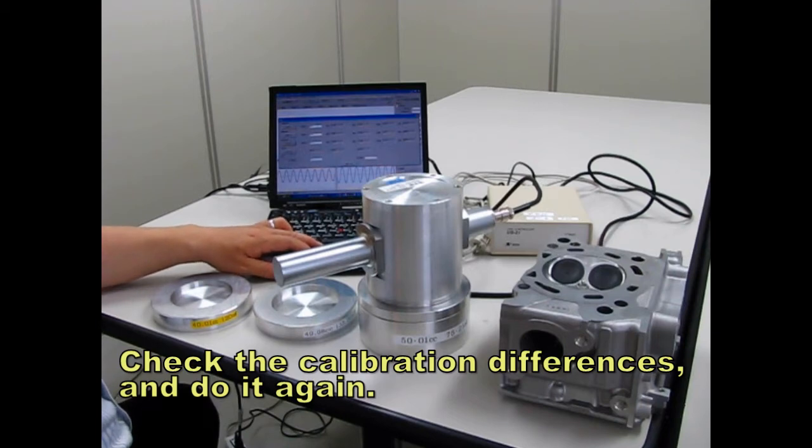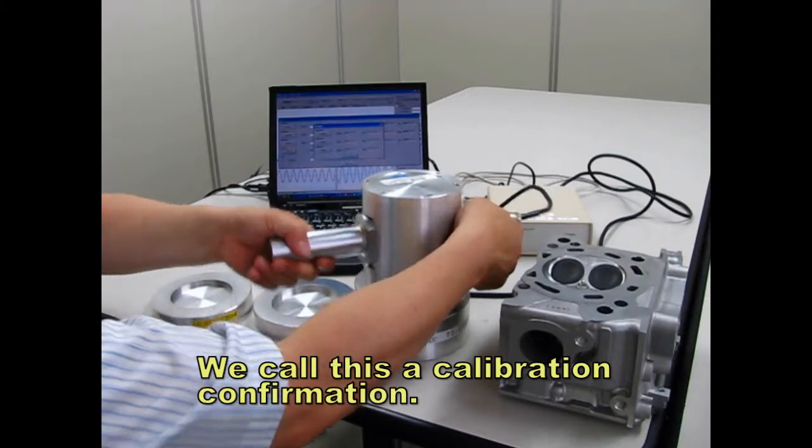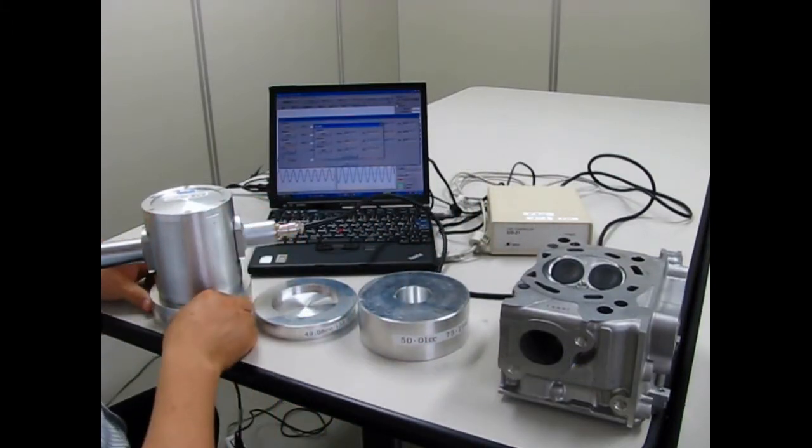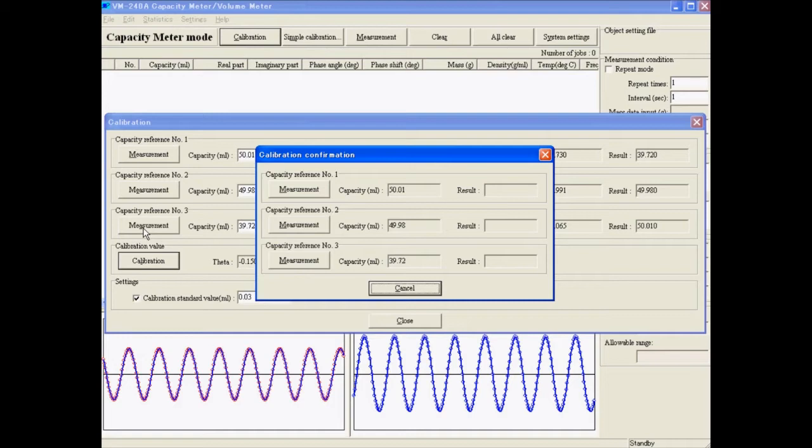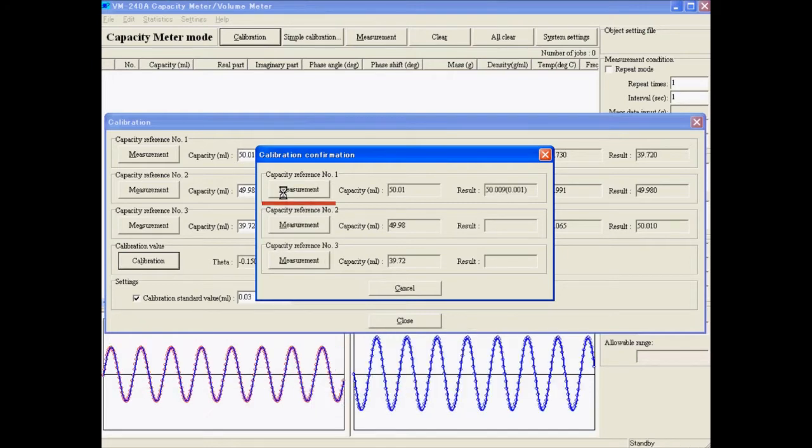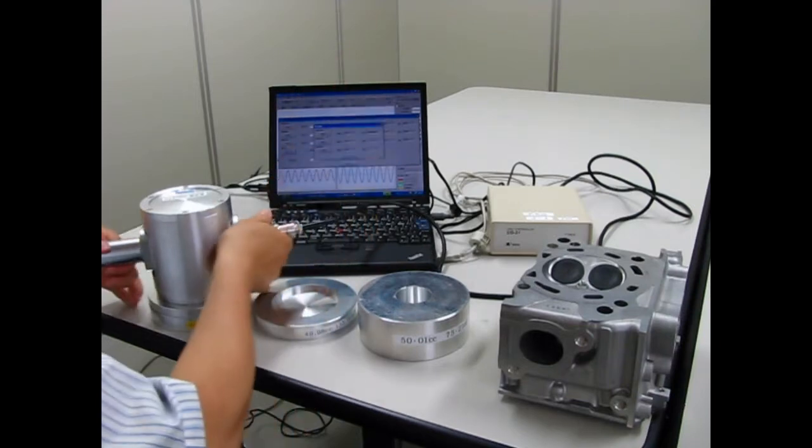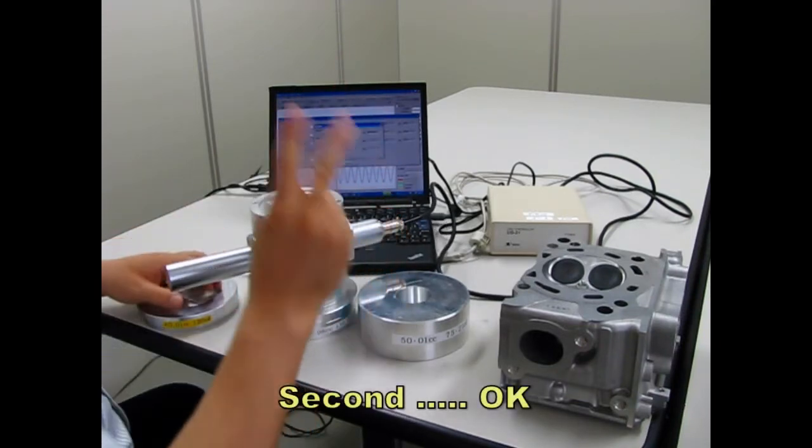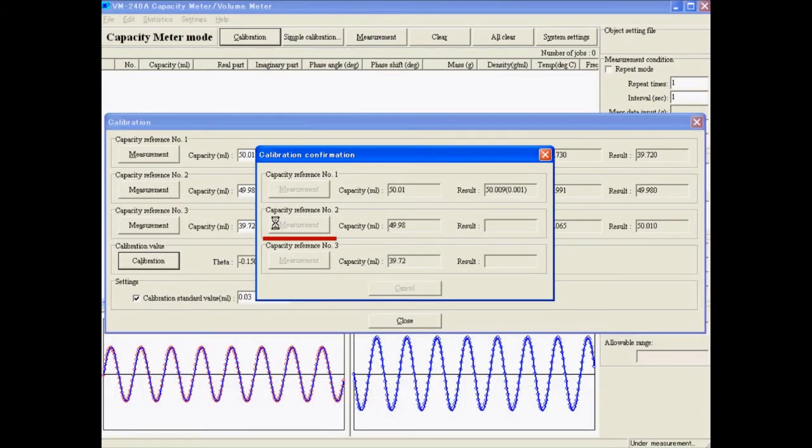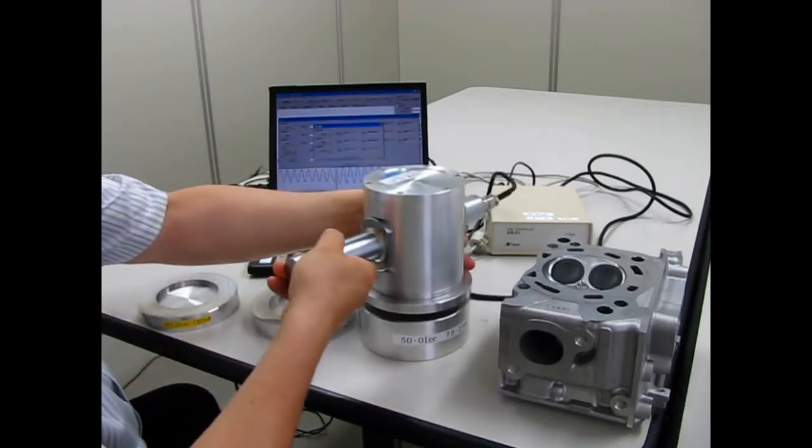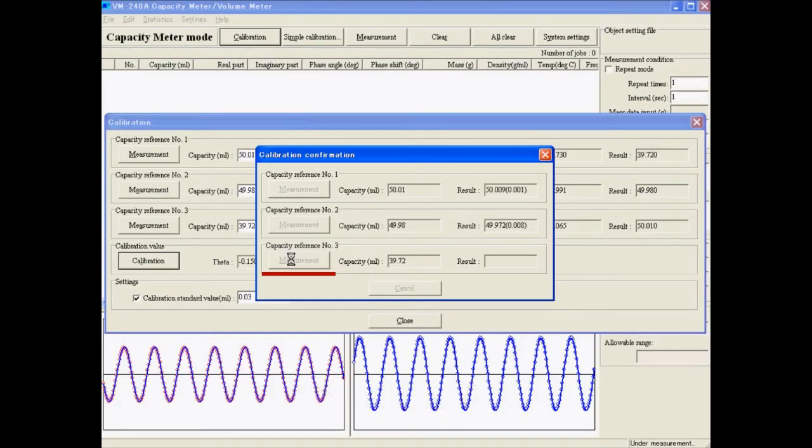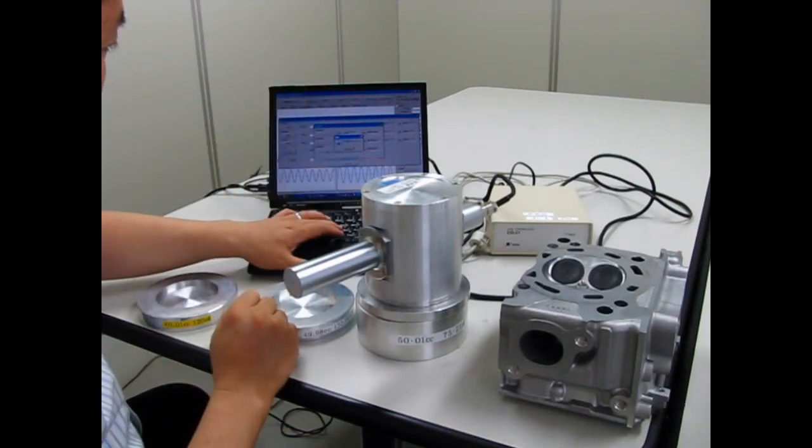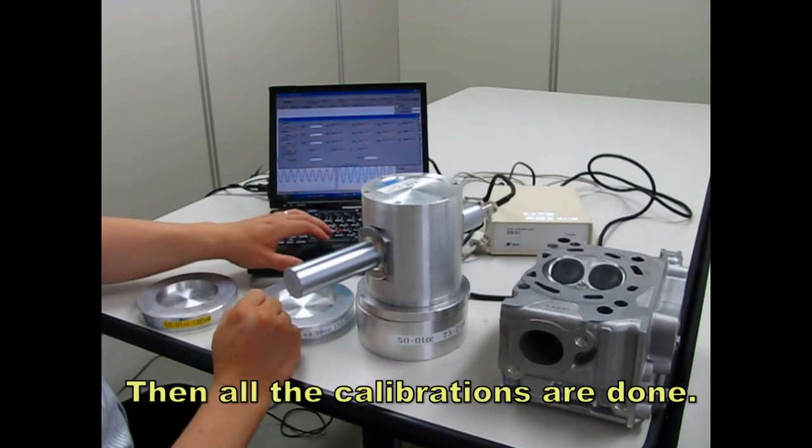Check the calibration differences and do it again. We call this a calibration confirmation. First, okay, second, okay, third, okay. Then all the calibrations are done.